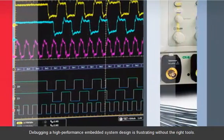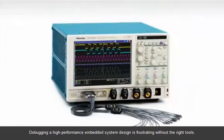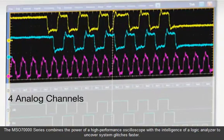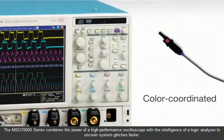Debugging a high-performance embedded system design is frustrating without the right tools. The MSO-70,000 series combines the power of a high-performance oscilloscope with the intelligence of a logic analyzer to uncover system glitches faster.